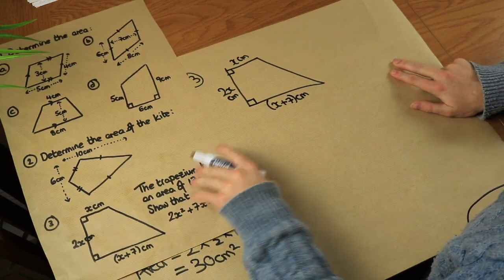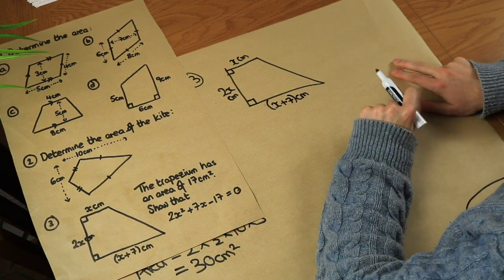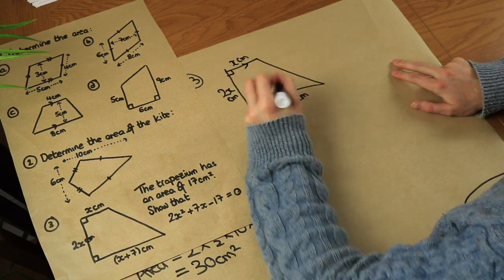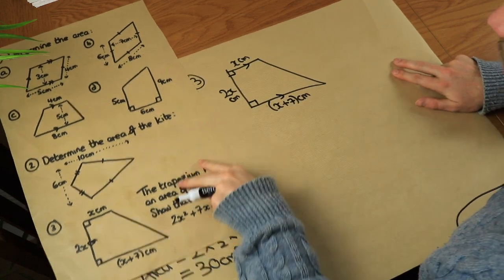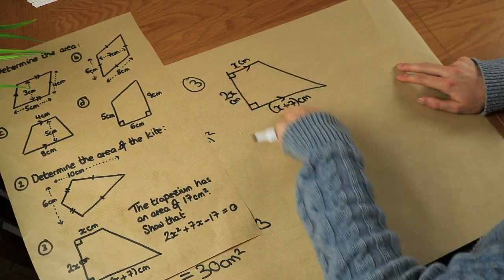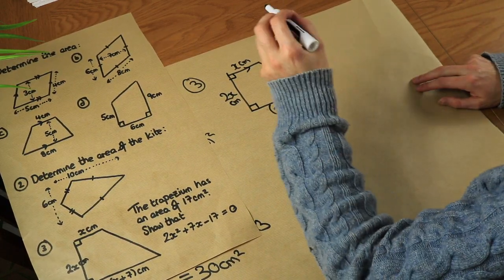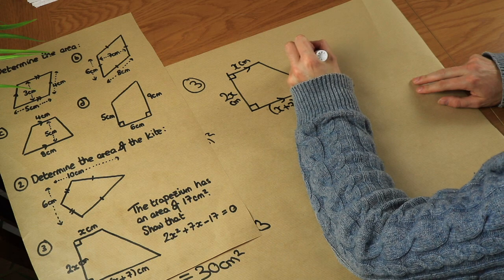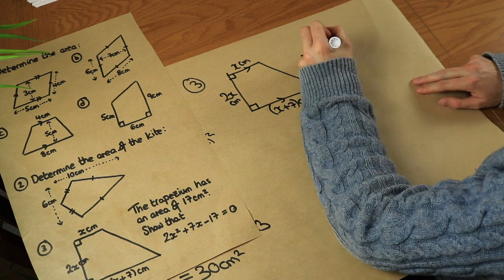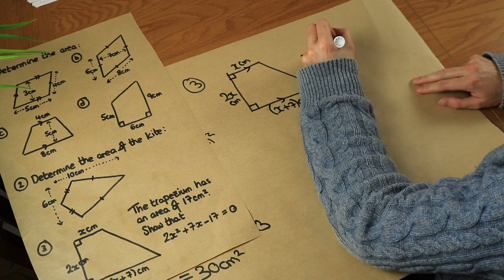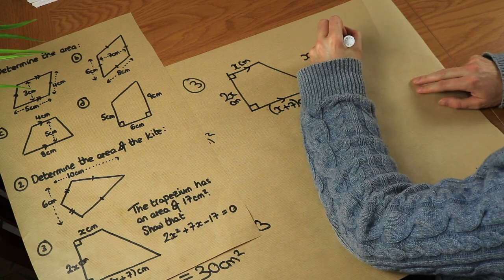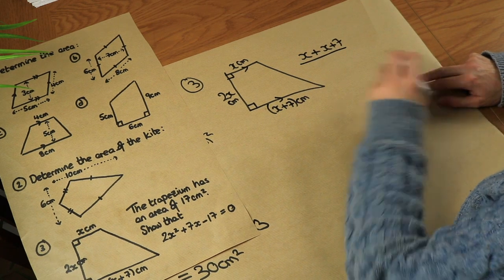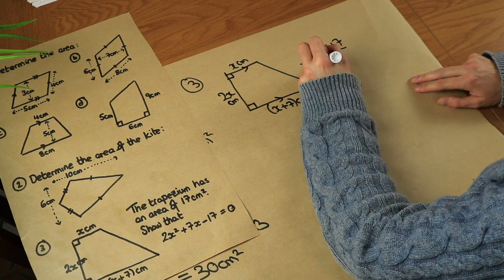To find the area of a trapezium we average the parallel sides — those two sides there — and multiply by the height between them. To find the average of the parallel sides we add them and divide by two. So we write x plus x plus 7, and divide by two.